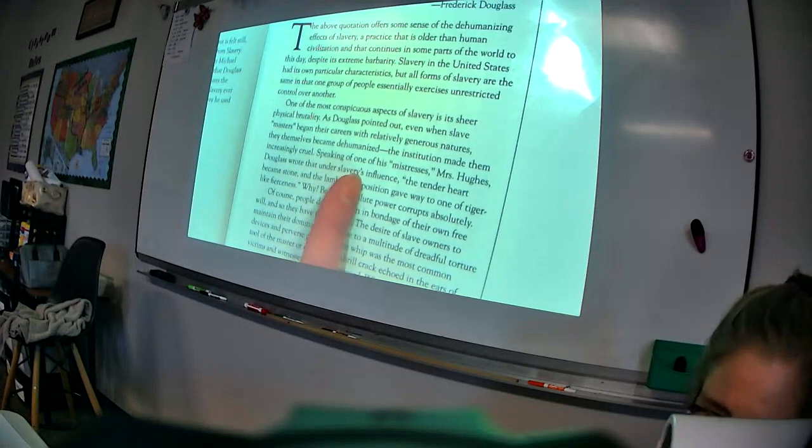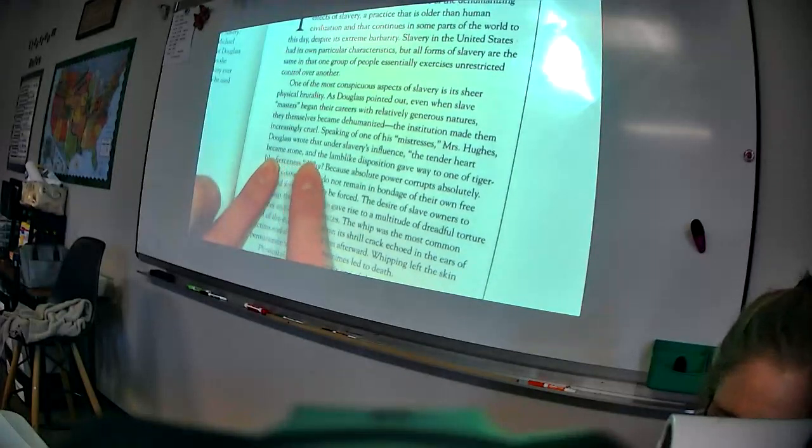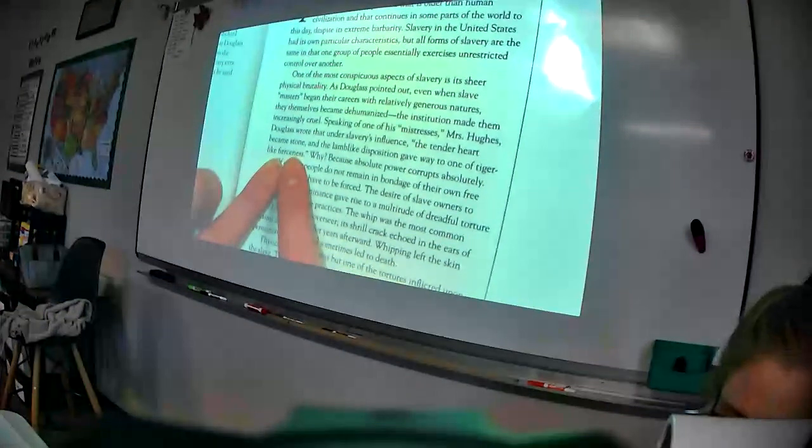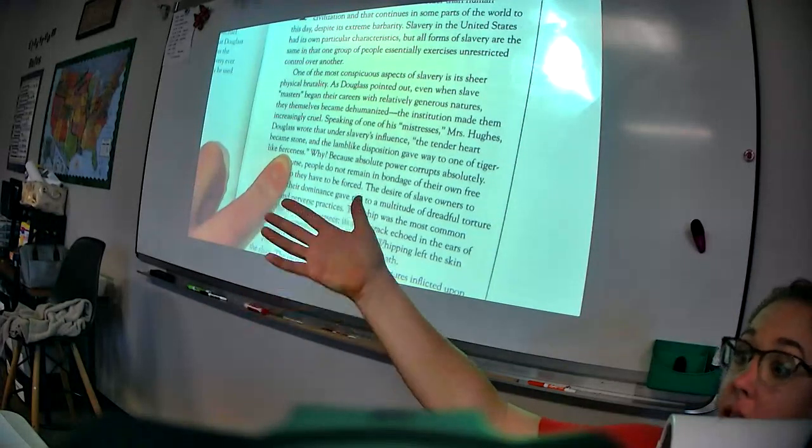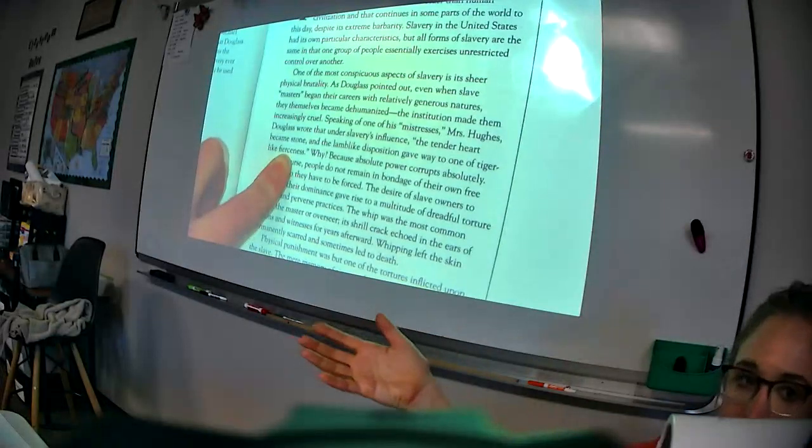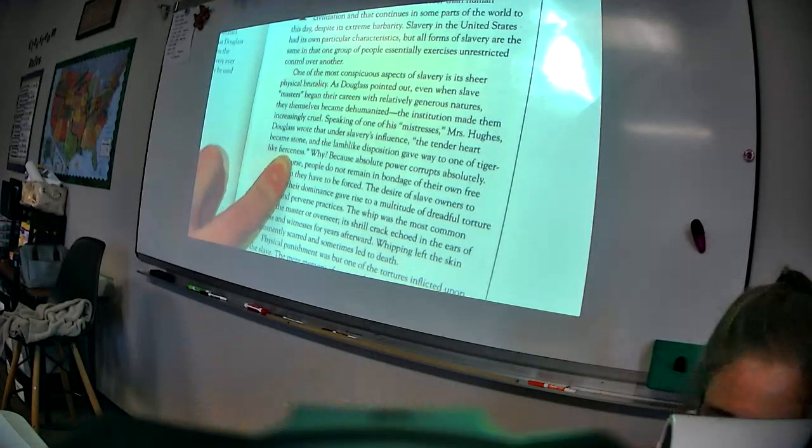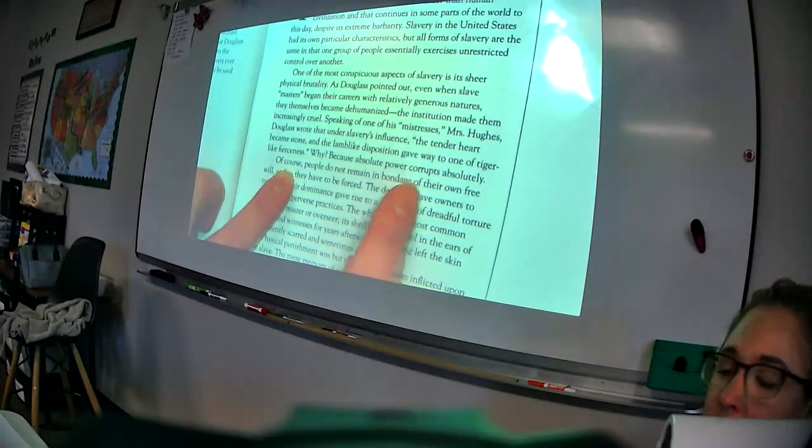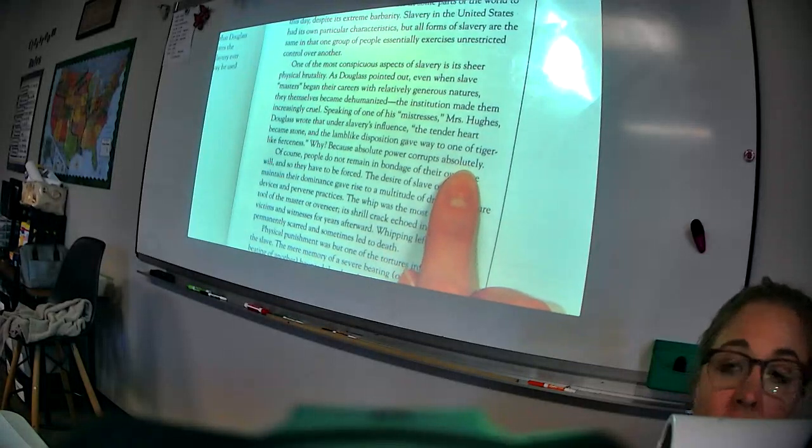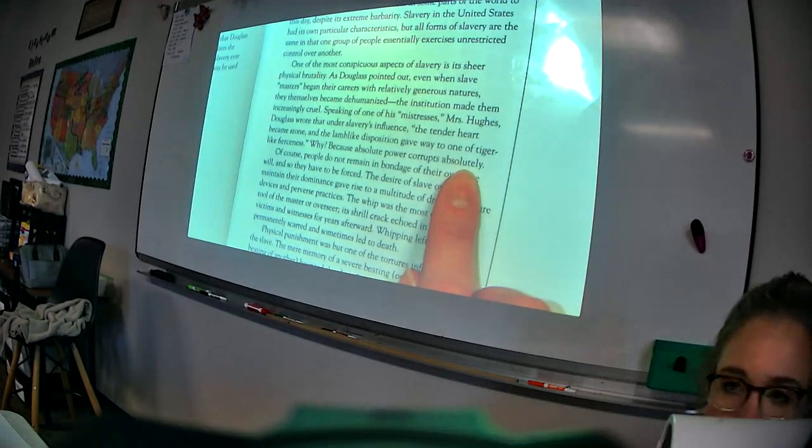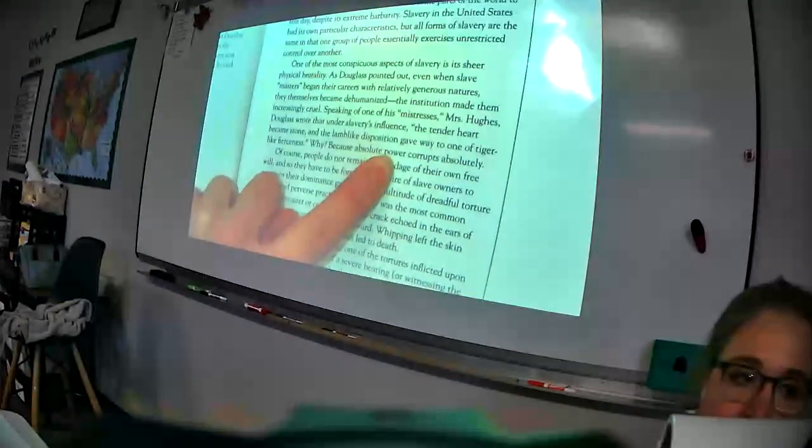One of the most conspicuous aspects of slavery is its sheer physical brutality. It was really, really tough on the person's body. As Douglass pointed out, even when slave masters began their careers with relatively generous natures, they themselves became dehumanized. The institution made them increasingly cruel. The longer they had control of slaves, the less nice of a person they became. They became more and more cruel. Speaking of one of his mistresses, Mrs. Hughes, Douglass wrote that under slavery's influence, her tender heart became stone, and the lamb-like disposition gave way to one of tiger-like fierceness. So what kind of animal did she start like? A lamb, which is gentle, soft, and sweet, wouldn't hurt anybody. What kind of animal did she end up as? A tiger. Do you see the difference?